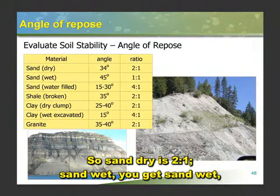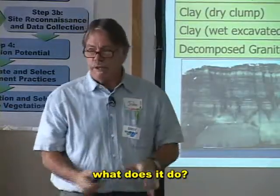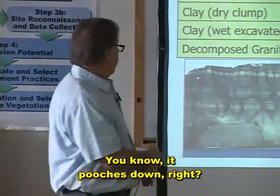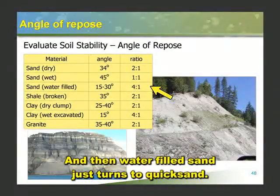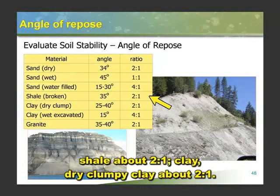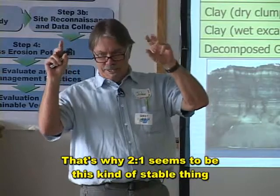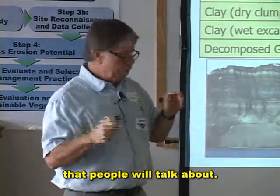Sand dry is two-to-one. Sand wet — you get sand wet, it poochs down. And water-filled sand just turns to quicksand. So sand dry has an angle of repose of two-to-one. Shale, about two-to-one. Clay dry — clumpy clay — about two-to-one. That's why two-to-one seems to be this kind of stable thing that people talk about — it's because it's dry granular material.